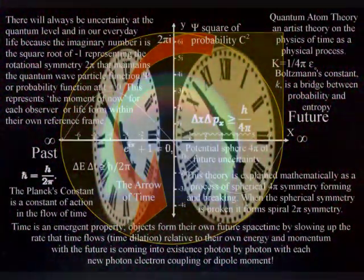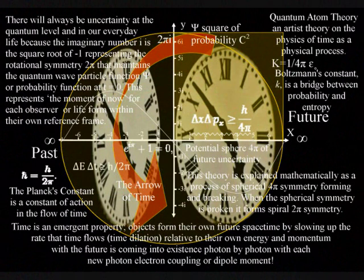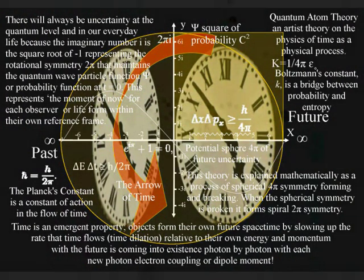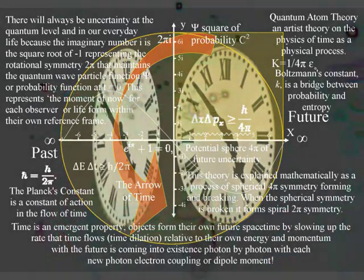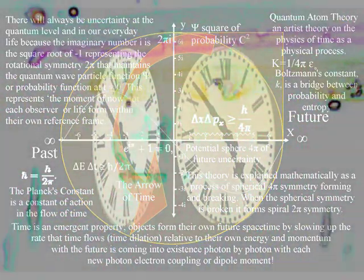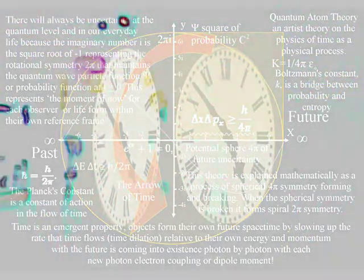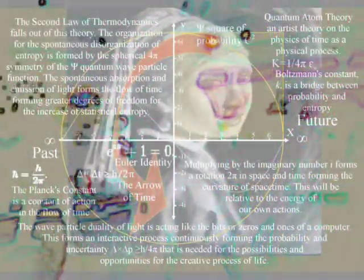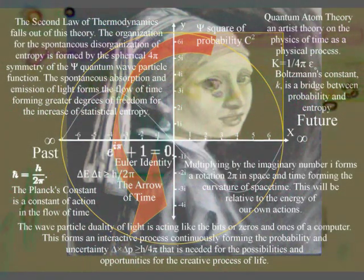This theory explains the universe as a continuum, a continuous process of spherical symmetry forming and breaking. The driving force for this process is the spontaneous absorption and emission of light. If our eyes were more sensitive to the light, we would be able to see that everything is radiating electromagnetic radiation or light continuously. This is because the universe is never at absolute zero.